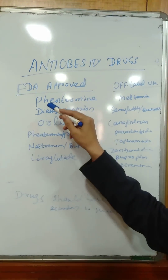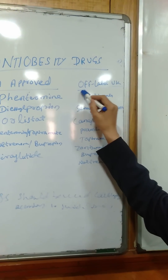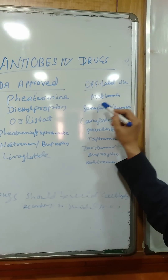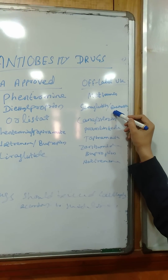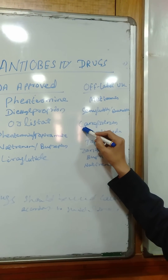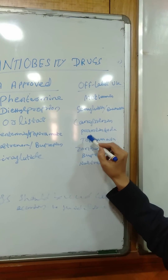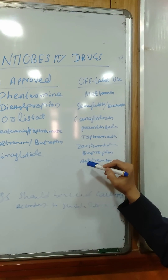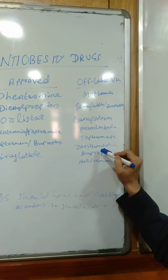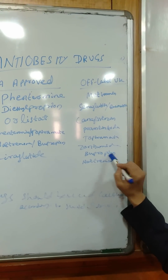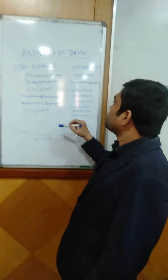Sometimes physicians use these as off-label use. Off-label drugs include Metformin in case of obesity, Semaglutide or Exenatide, SGLT2 inhibitors like Canagliflozin, Pramlintide, Topiramate, Zonisamide and other anti-epileptic drugs, and Bupropion and Naltrexone are also used in obesity by some physicians.